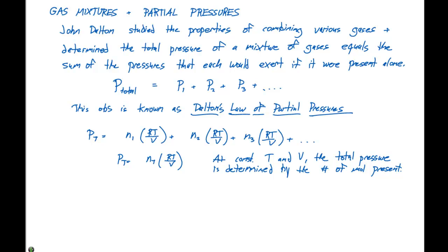Because each gas behaves independently, we can relate the amount of a gas in a mixture to its partial pressure. If we take the partial pressure of each gas, which is the pressure of one individual gas divided by the total pressure, we can say it's N1 times RT over V divided by N total times RT over V. This simplifies to N1 over N total because the RT and V cancel out.